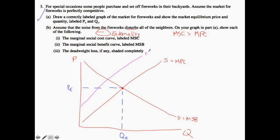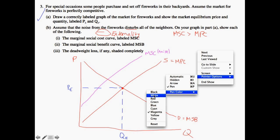The marginal social cost is higher than the private cost because we have a negative externality. The marginal social cost represents the true cost to society when you include all external costs — in this case, noise. The marginal private cost only considers the typical consumer's own costs, like raw materials, without accounting for the fireworks' influence on others. Our market equilibrium is at QE and PE, but the actual optimal point for society is where marginal social cost equals marginal social benefit.